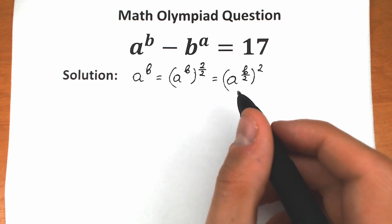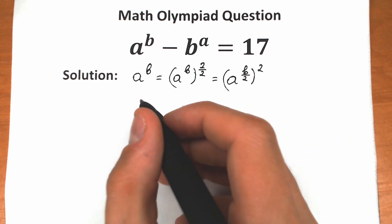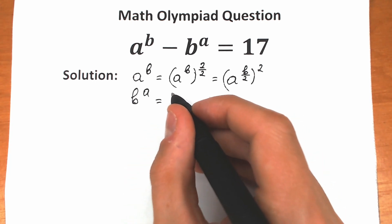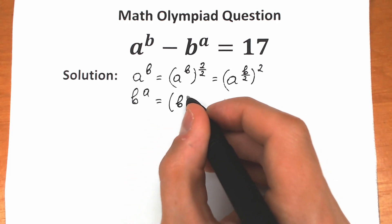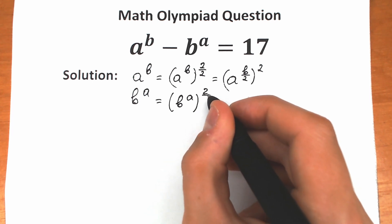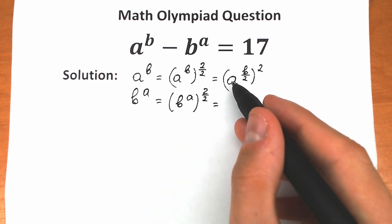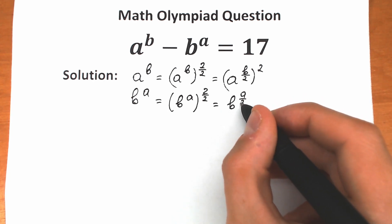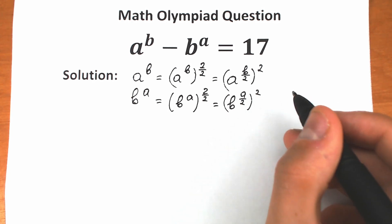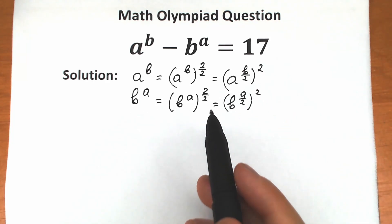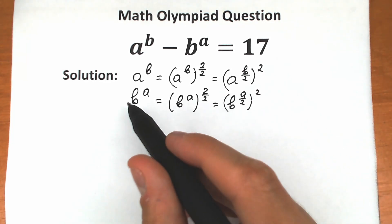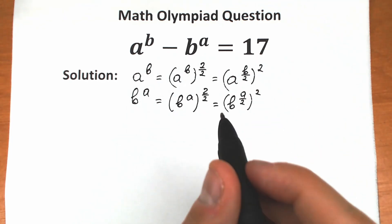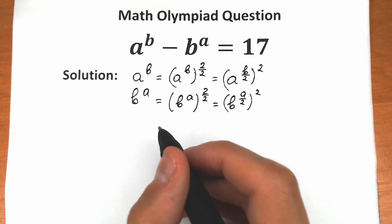Now let's do the same thing with b to the power a. We can write it as b to the power a raised to the power 2 over 2. Using the same logic, we can swap the positions of b and a to get b to the power a over 2, squared. This changes nothing but helps us a lot when we plug it into the equation.